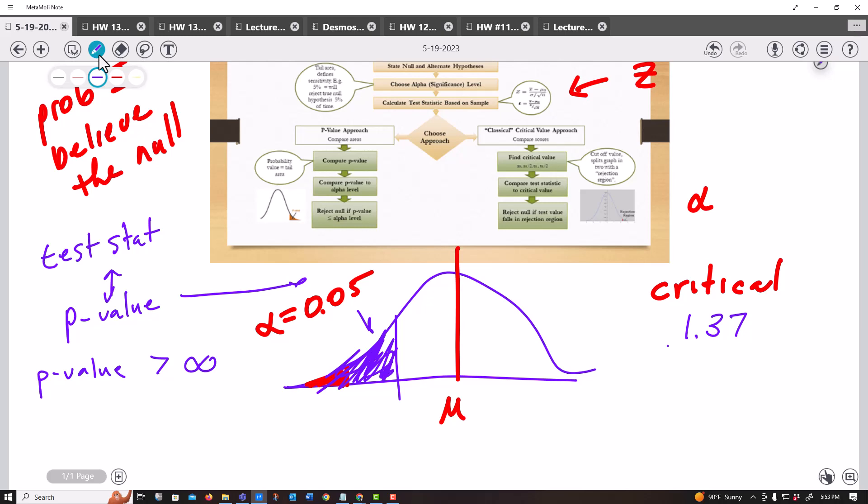If we have a small p-value, meaning like, I don't know, 0.01, and that's less than alpha of 0.05, that's saying that's a small probability I even believe you. So hopefully that kind of is a little better, helps a little bit.